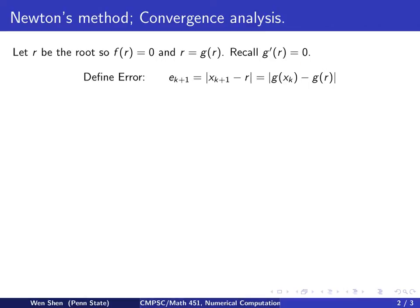We define the error at step k+1 as |x_{k+1} - r|, the exact distance in absolute value. Since x_{k+1} is computed as a fixed point iteration, it's g(x_k), and we write r as g(r) because r is a fixed point.